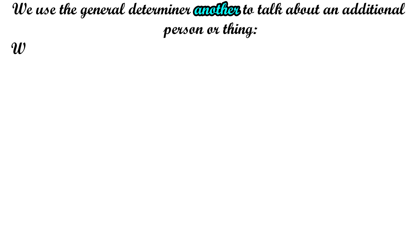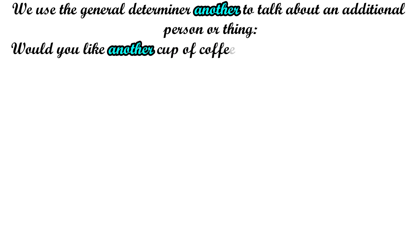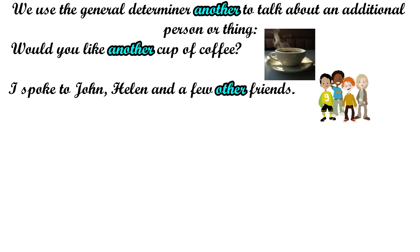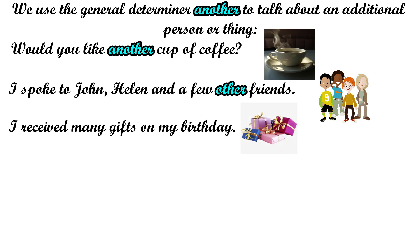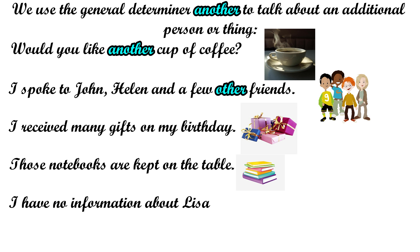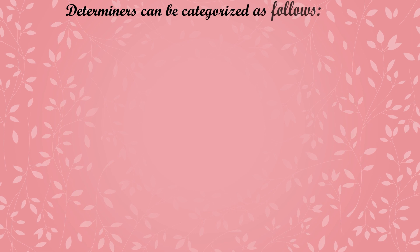We use the general determiner another to talk about an additional person or thing. For example: Would you like another cup of coffee? I spoke to John, Helen, and a few other friends. More examples: I received many gifts on my birthday — here many is an example of a general determiner. Those notebooks are kept on the table — here those is a specific determiner. I have no information about Lisa — here no is an example of a negative determiner.